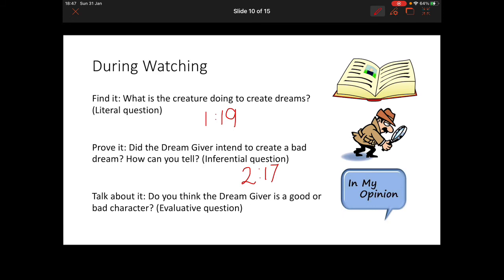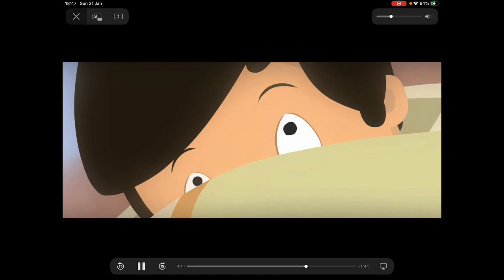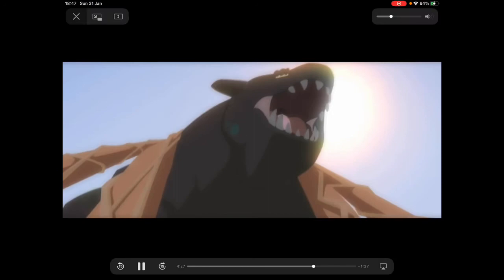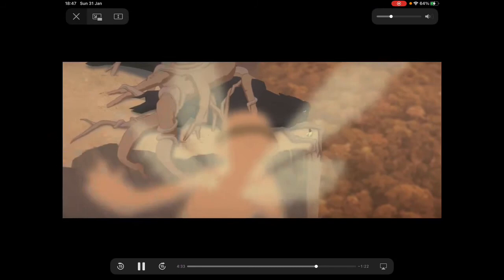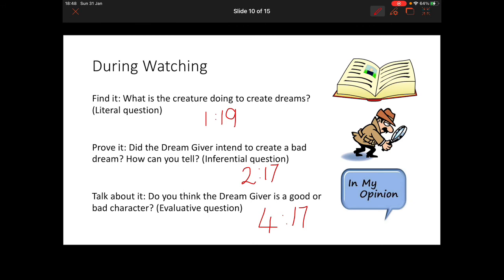I'm going to show you what happens at 4 minutes and 17 seconds and this helped me decide if I thought he was a good or a bad character. So what is he doing to other people with this? So it looked to me like he helped the boy in the dream. So you have to decide do you think the Dream Giver is a good or a bad character and you have to give you a reason why.